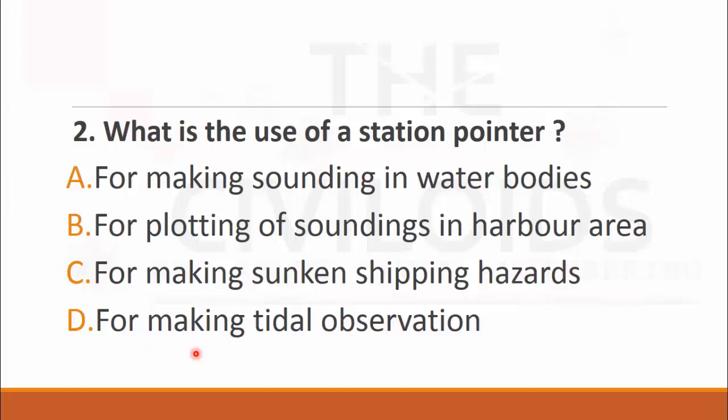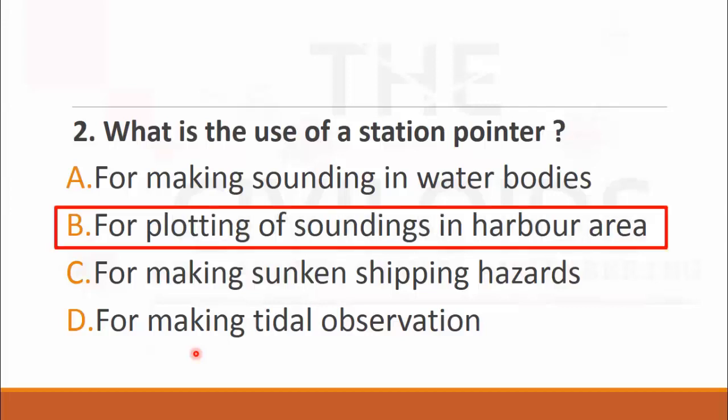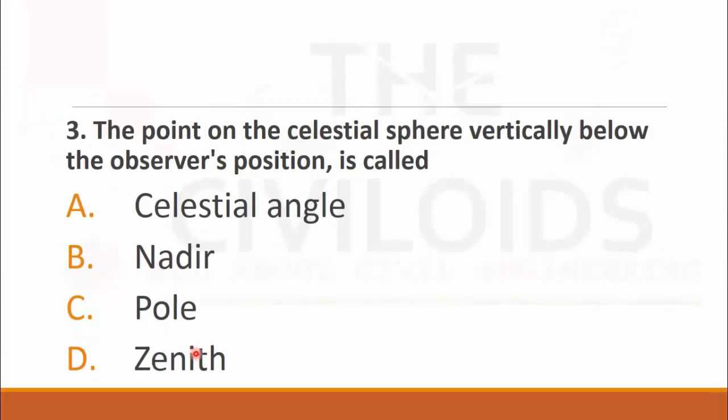MCQ number three: The point on the celestial sphere vertically below the observer's position is called. The choices are: A. celestial angle, B. nadir, C. pole, and D. zenith. As we know that zenith is the point vertically above the observer's position while nadir is the point vertically below the observer's position, so the right choice is B. nadir.